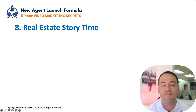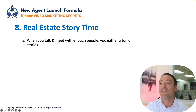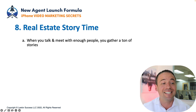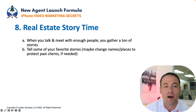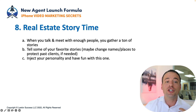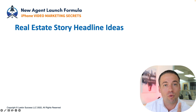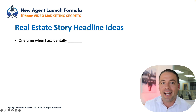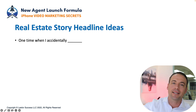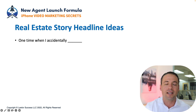Category eight is real estate story time. When you talk and meet with enough people, you gather a ton of stories — no shortage of crazy, amazing, or frustrating things that have happened. This is the time to tell your favorite parts. Change names and places to protect clients and other agents. Inject your personality and have fun with this one — it has the power to get you a huge following if done right. Headline idea: 'One time when I accidentally [blank]' — like locking yourself out of an auto-locking door and having to climb in.